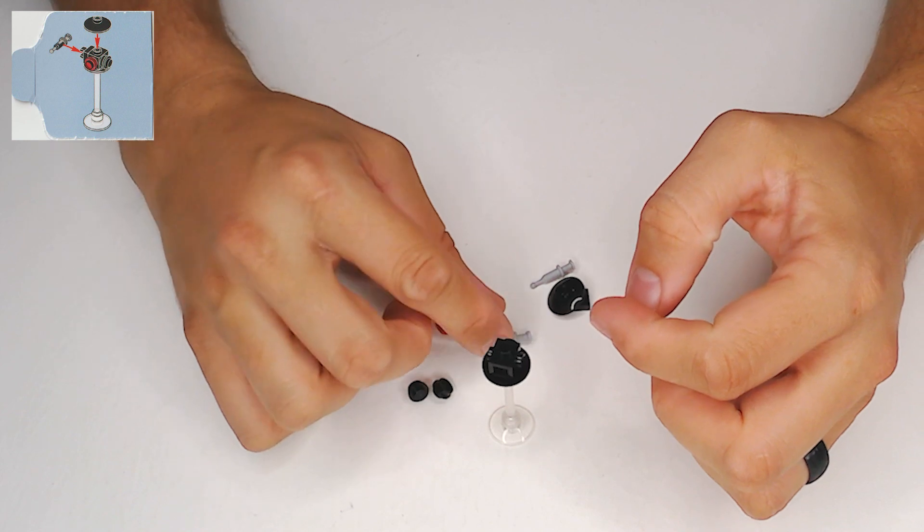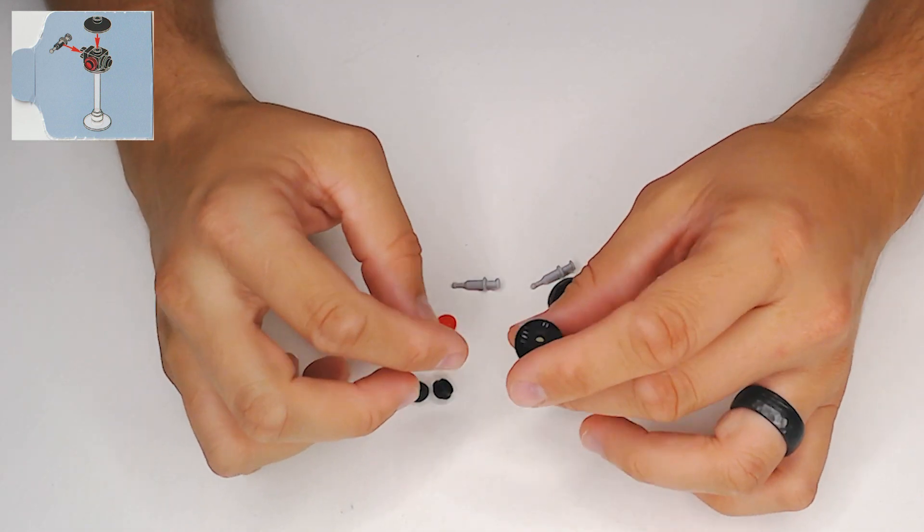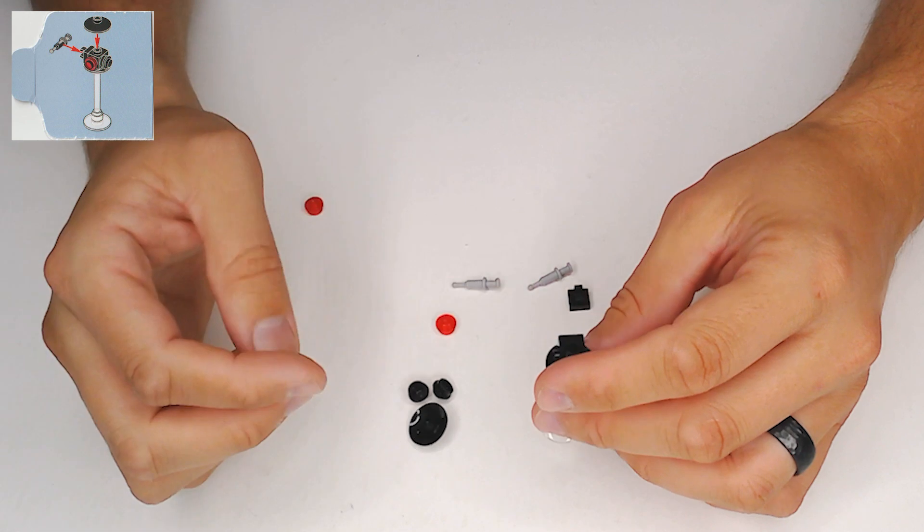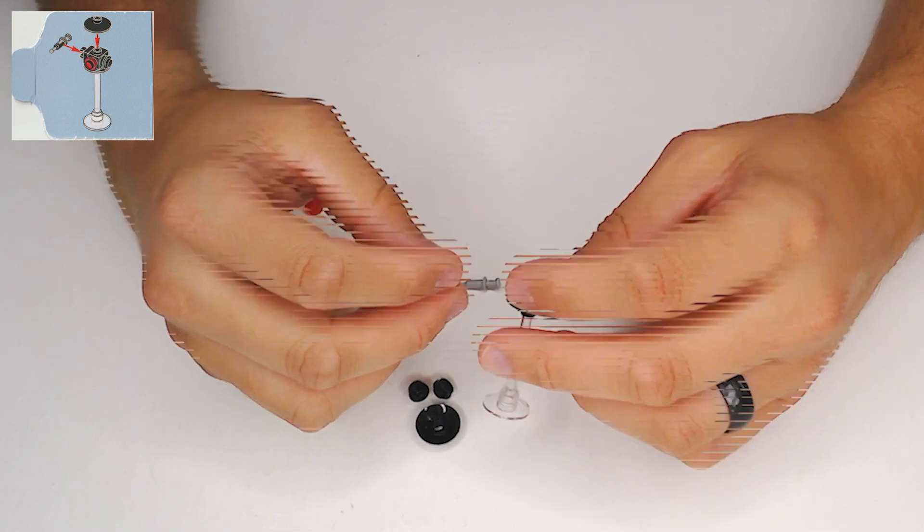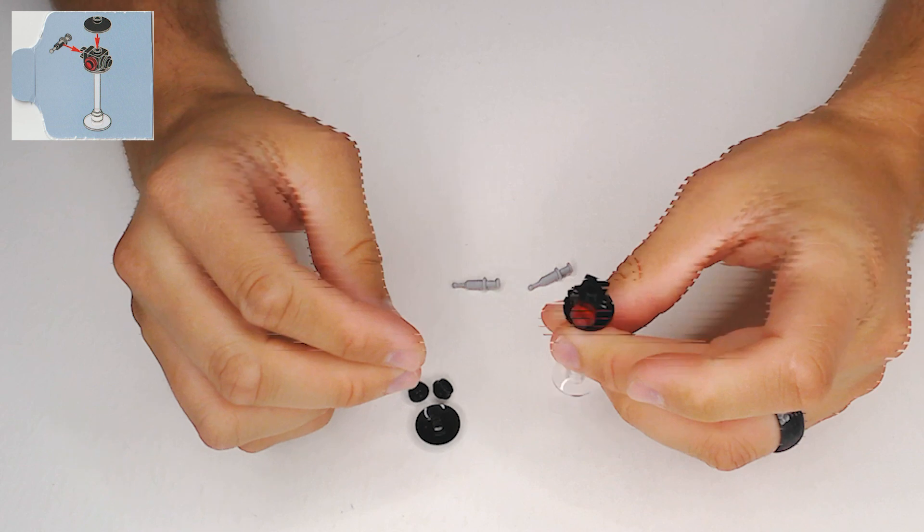So it connects with that and with that transparent pole that's in there. And then take one of these red transparent beads and stick it on the front.